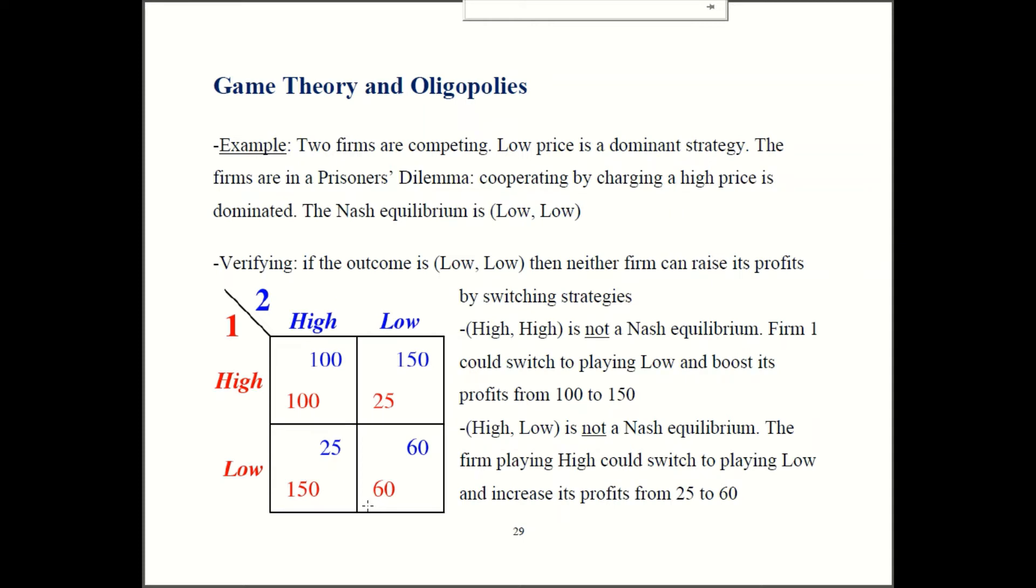As I mentioned in our previous episode, if you have a dominant strategy, then the players are going to do that in the Nash equilibrium. So because low is dominant, then low-low is going to be the Nash equilibrium. We also verify this. I'm verifying because there are some games where there is no dominant strategy, but you still have to find the Nash equilibrium.